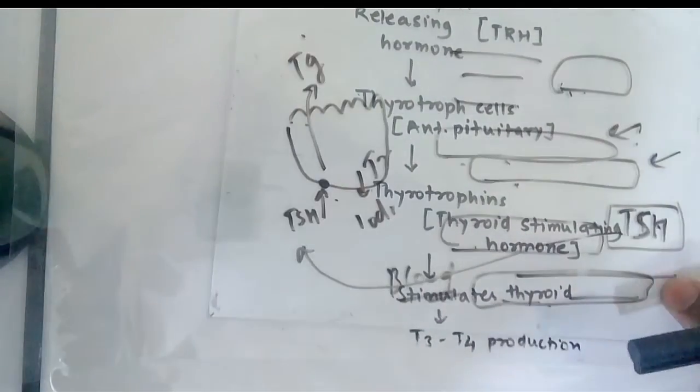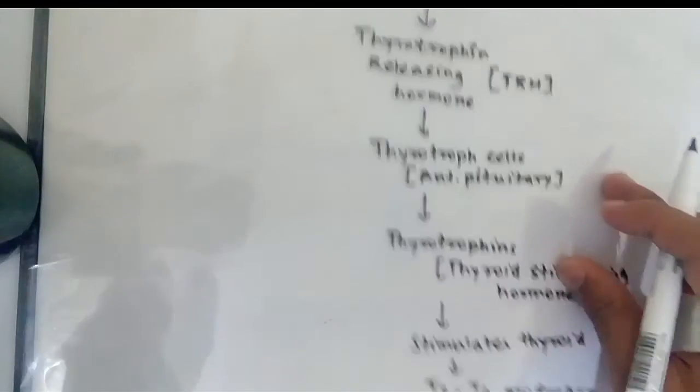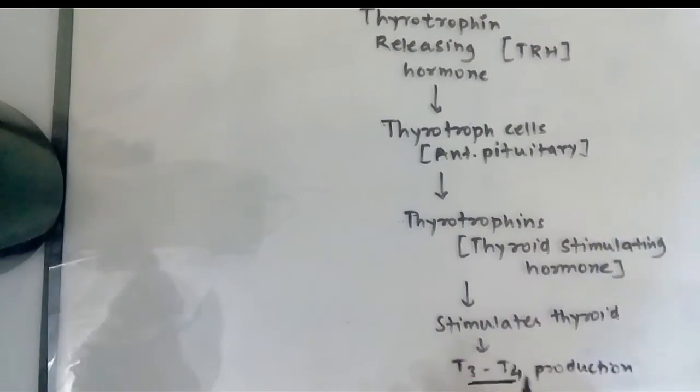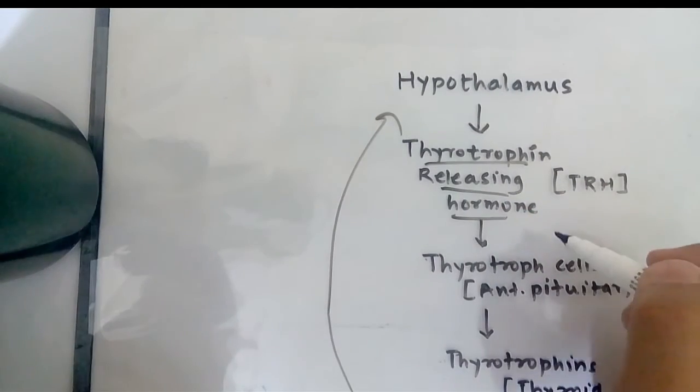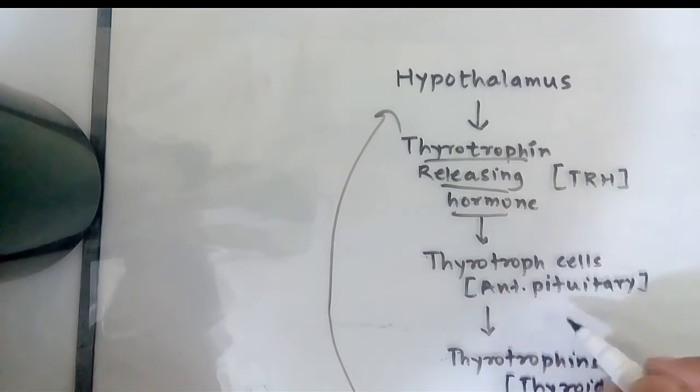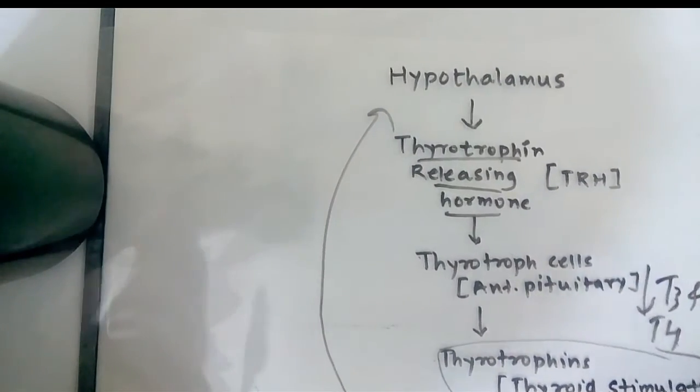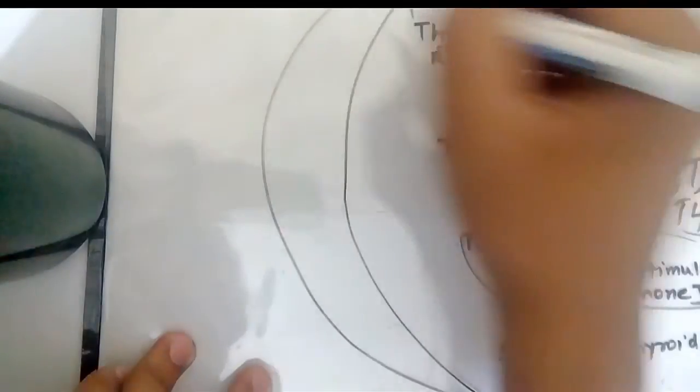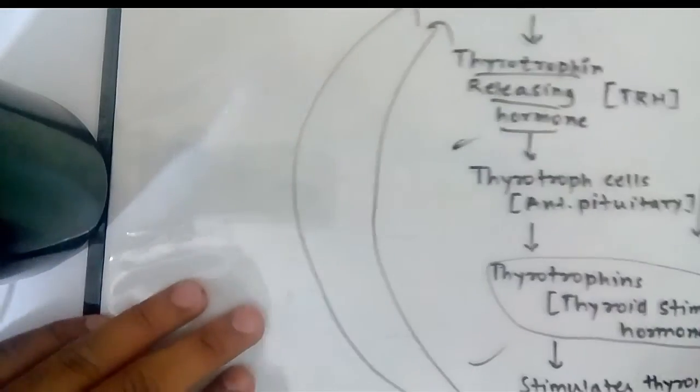There is a negative feedback. Suppose the T3 and T4 value is more in blood, then via negative feedback it suppresses the hypothalamus to secrete the thyrotropin-releasing hormone. Because of this there will be a decrease in TSH and there will be decreased production of hormones. Similarly if it is low in the serum then there is a positive feedback which increases the secretion of TRH which increases the secretion of TSH.